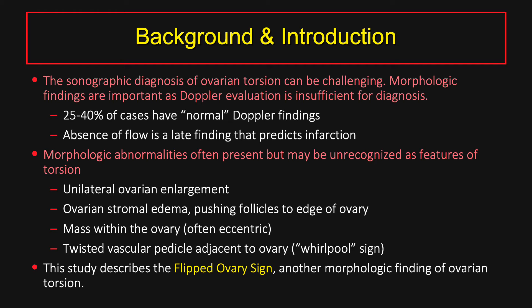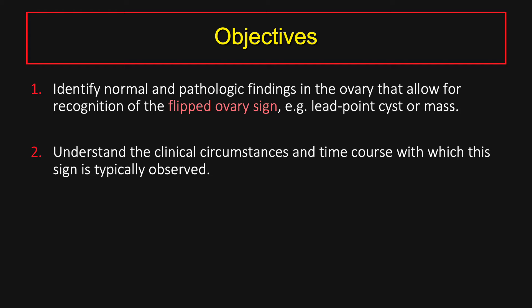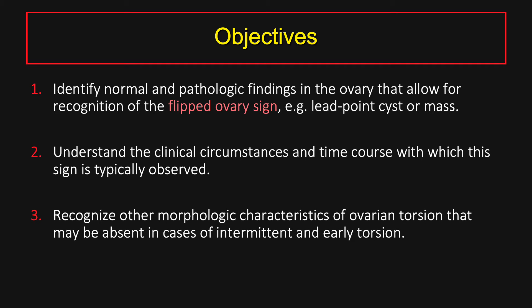This study describes the flipped ovary sign, which is another morphologic finding of ovarian torsion. Our objectives today are to identify normal and pathologic findings in the ovary that allow for recognition of the flipped ovary sign — for example, in the setting of a lead point cyst or mass — to understand the clinical circumstances and time course with which this sign is typically observed, and to recognize other morphologic characteristics of ovarian torsion that may be absent in cases of intermittent or early torsion.